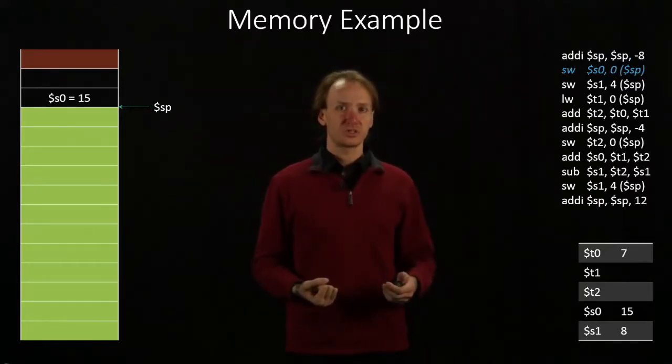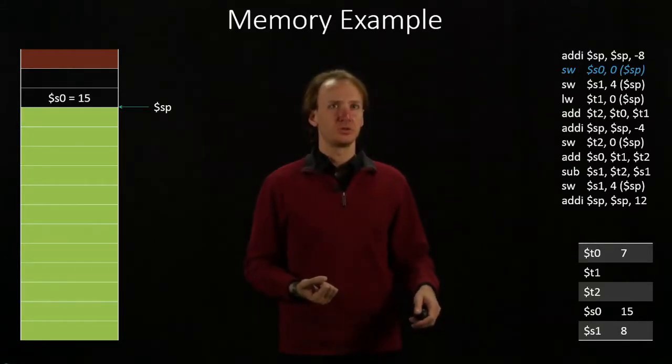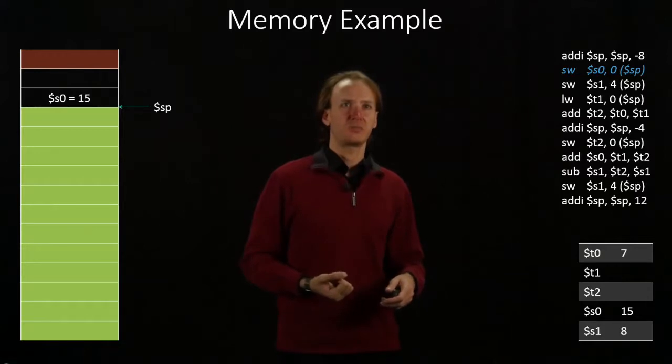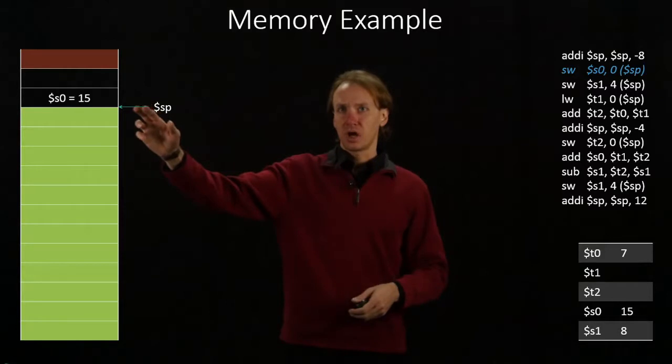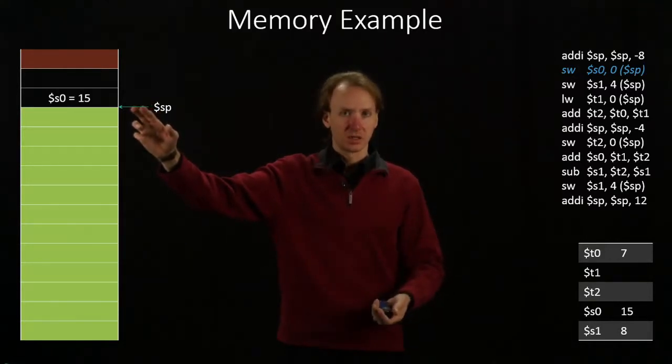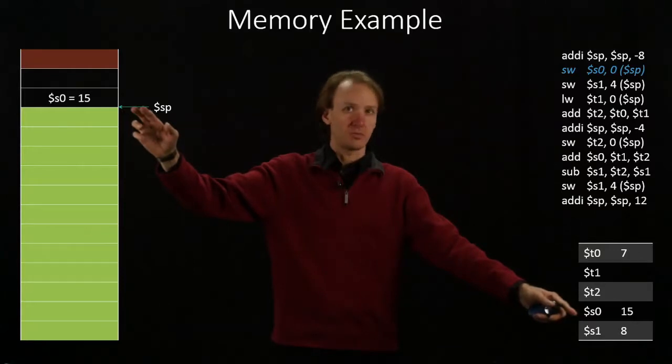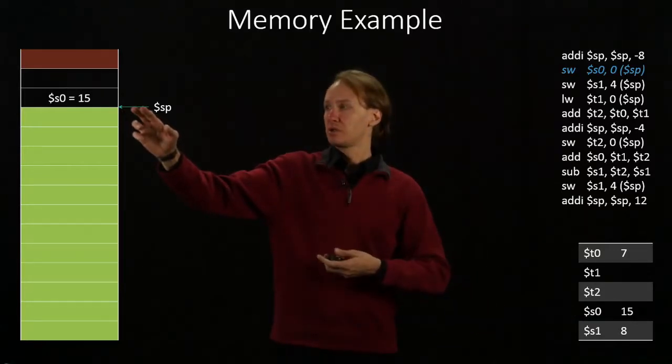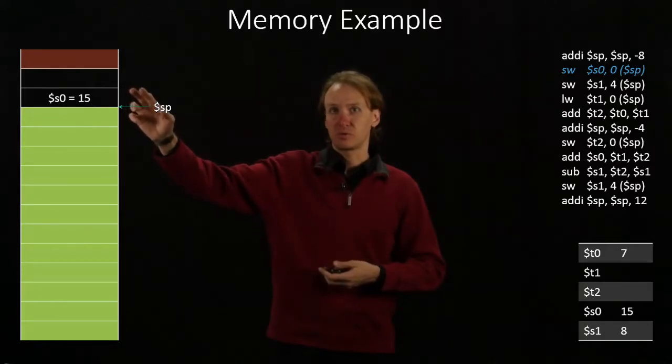The next instruction says I should take the data in S0 and copy it to the region of memory specified by the stack pointer plus 0. So there's my stack pointer. I go up 0 more bytes and I copy in the 32 bits from S0. So that will fill up memory region from stack pointer to stack pointer plus 3.